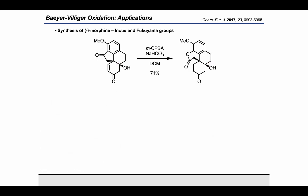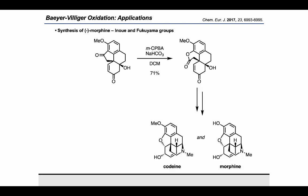In another quick example from 2017, the Inoue and Fukuyama groups used the Bayer-Villiger oxidation to convert a cyclic ketone starting material into the lactone product in good yield. This intermediate was then carried on to access codeine and morphine.